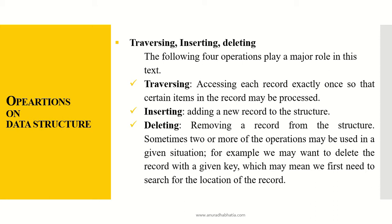Now, what are the various operations that can be performed on any data structure? The first operations are traversing, inserting, and deleting. Traversing means accessing each record exactly once so that certain items in the record may be processed. For example, when we read data into an array and want to print all elements, scanning from the first to the last element is known as traversing. Similarly, if ten people are standing in a queue and we move sequentially from the first to the tenth person, that is also traversing.